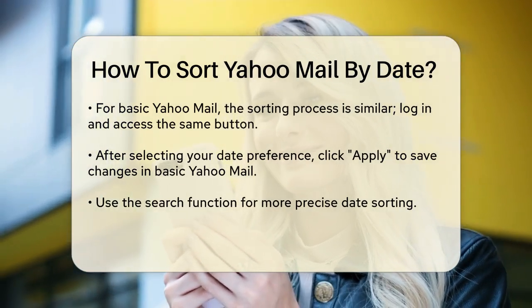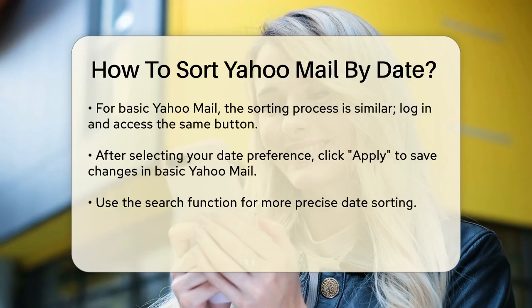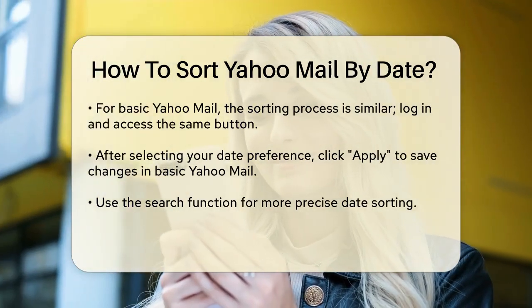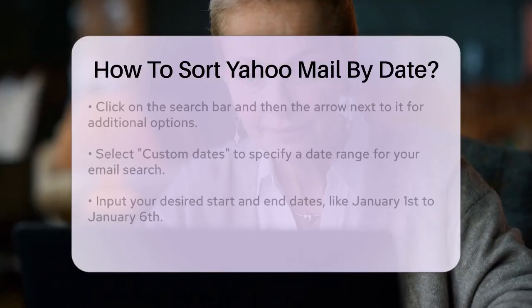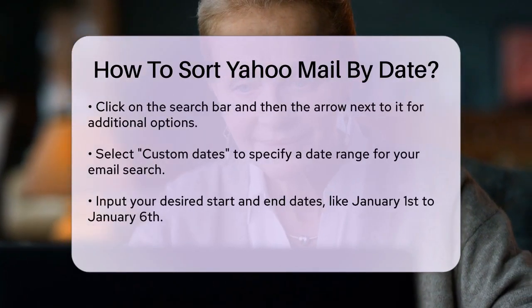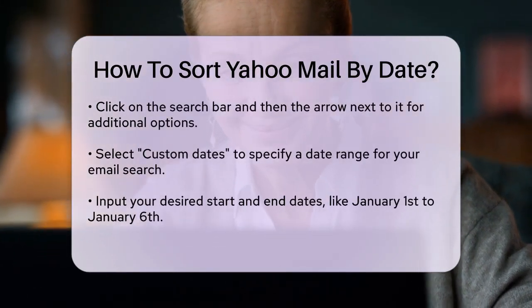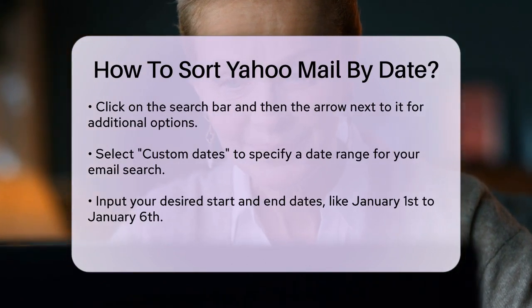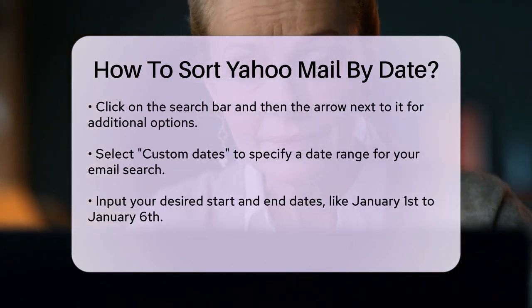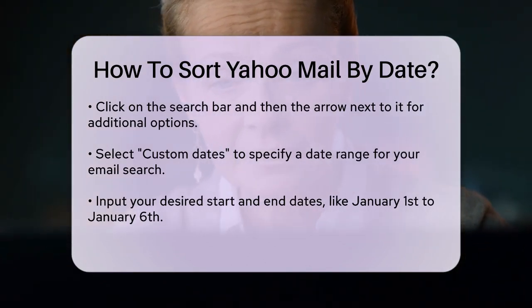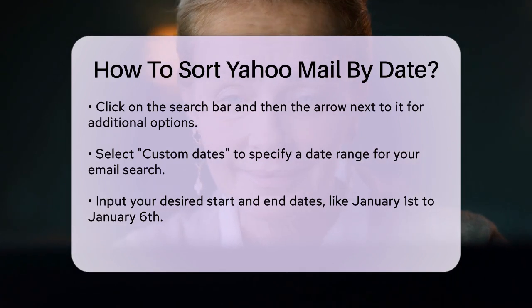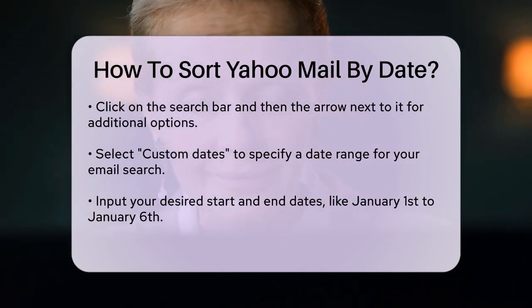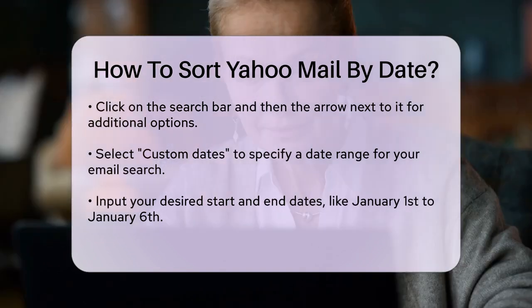For more precise control, especially if you need to find emails within a specific date range, you can use the search function. Click on the search bar at the top of your inbox, and then click on the arrow next to it. Here, you can select Custom Dates to specify a date range. For example, if you want to find all emails received between January 1st and January 6th, you would select these dates in the Custom Date option.